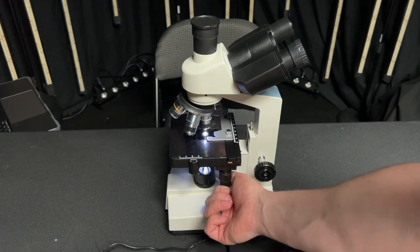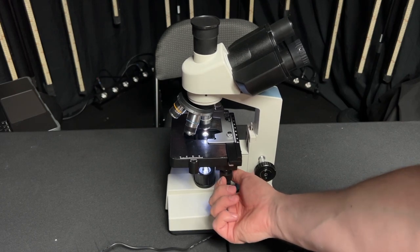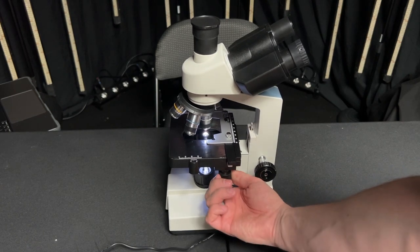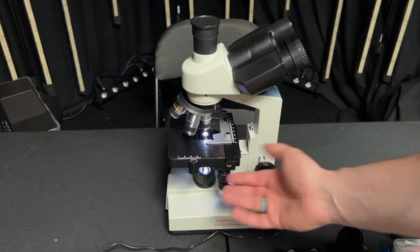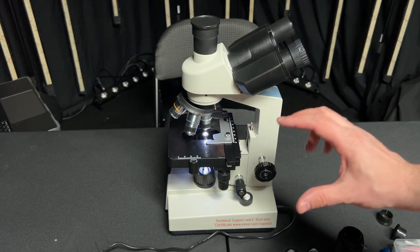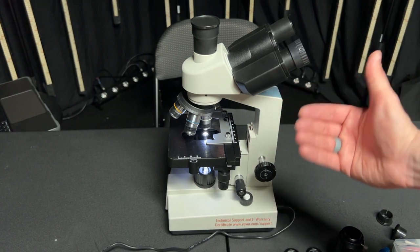You also have adjustments here. For example this one moves the tray left and right and it's also got a forward and back adjustment which means once you have a specimen in and you're looking through the microscope you can use those knobs there to really move it around very carefully and dial it into exactly what you want to look at.